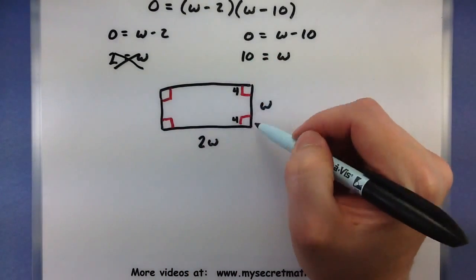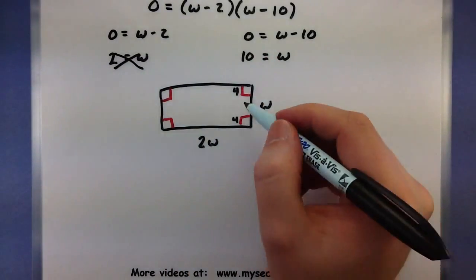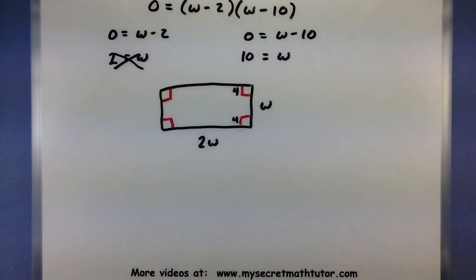However, if I have 10 centimeters for the width, then I have plenty of cardboard to cut a couple of 4 inch squares out of it. Same thing if I use 10 for my W over here. This would make an entire length of 20, and I'd have plenty of room to cut out a couple of 4 inch squares.